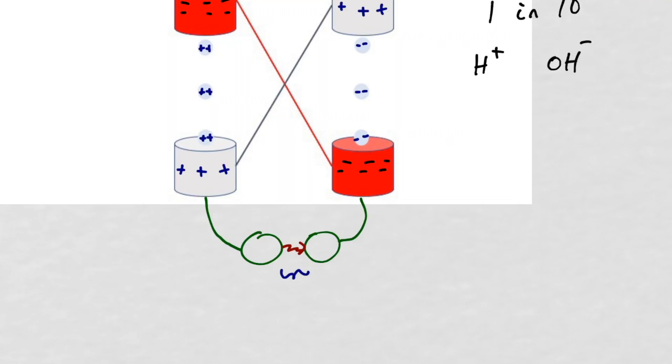The water dropping capacitor is an example of an electrostatic generator. The energy building up in the capacitor is coming from gravity.